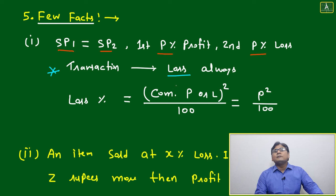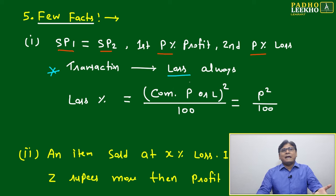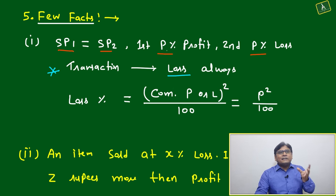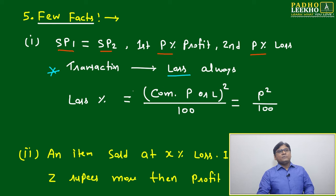This is 100% sure the transaction will land up in loss always, irrespective of your value of selling price, irrespective of your value of p. You will always land in loss if selling price is same, one is sold in p percent profit, one is sold in p percent loss.